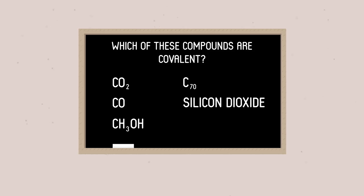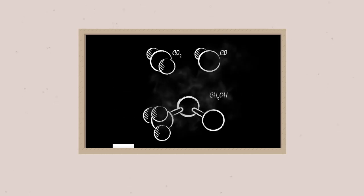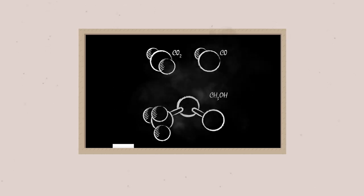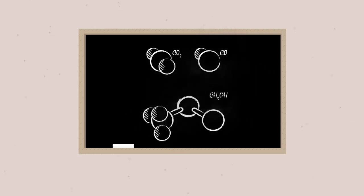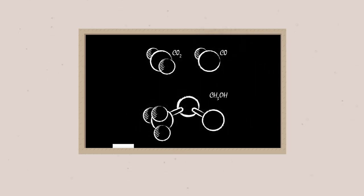Solved it? Ok. The answer is, all of these compounds are covalent. Carbon dioxide, carbon monoxide, and methanol are all small molecules. Organic molecules form covalent bonds between hydrogen and carbon.